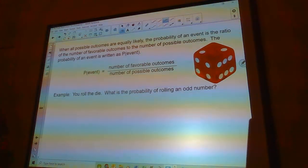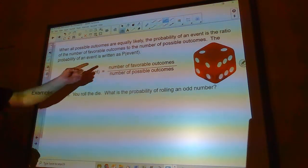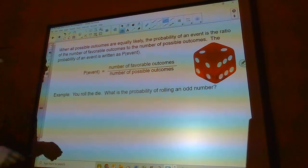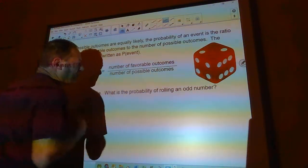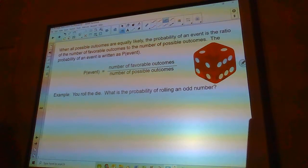When all possible outcomes are equally likely, the probability of an event is the ratio of the number of favorable outcomes to the number of possible outcomes. The probability of an event is written as P of whatever the event is. P, the probability of the event, is the number of favorable outcomes divided by the number of possible outcomes.